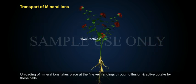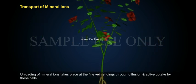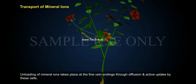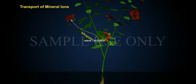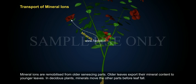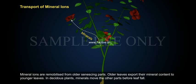Unloading of mineral ions takes place at the fine vein endings through diffusion and active uptake by these cells. Mineral ions are remobilized from older senescing parts. Older leaves export their mineral content to younger leaves. In deciduous plants, minerals move to other parts before leaf fall.